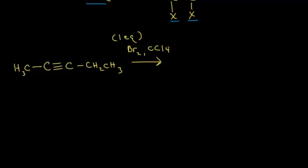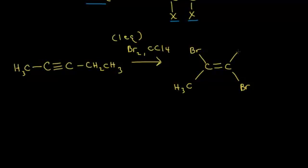I'm going to add my two bromines anti to each other. The triple bond becomes a double bond, and my two bromines add on opposite sides of that double bond. I still have a methyl group connected to the carbon on the left and an ethyl group — CH2CH3 — on the carbon on the right. That would be the result of the halogenation of this alkyne.